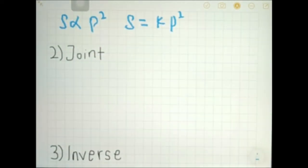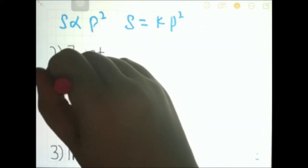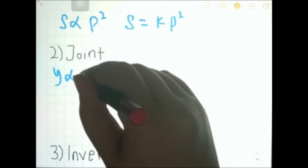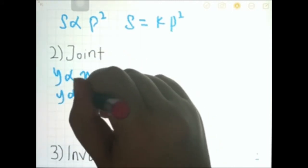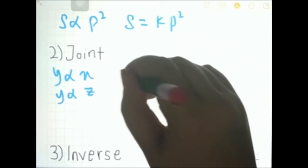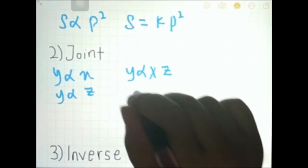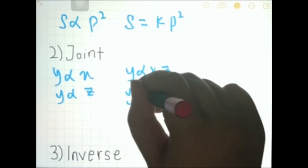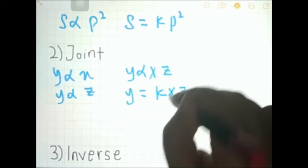Secondly, joint variation is when y varies with 2 or more elements. For example, y varies with x and y varies with z. So we can write it as y varies with x and z. In equation form, we write it as y equals kxz.